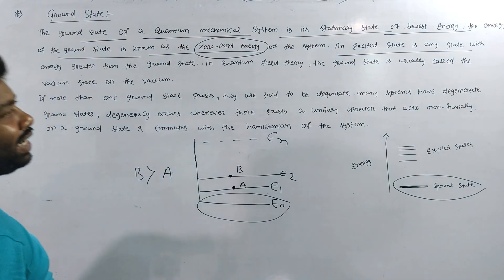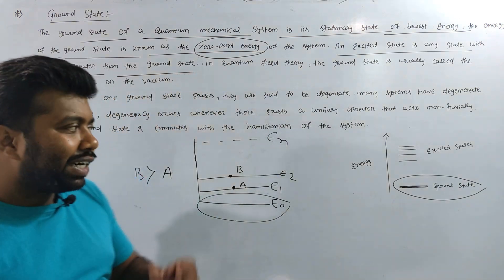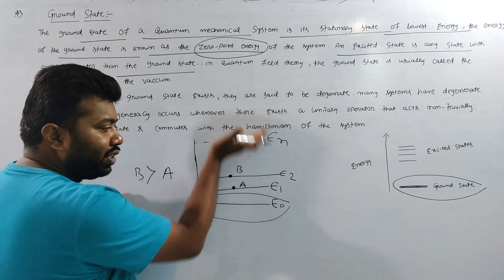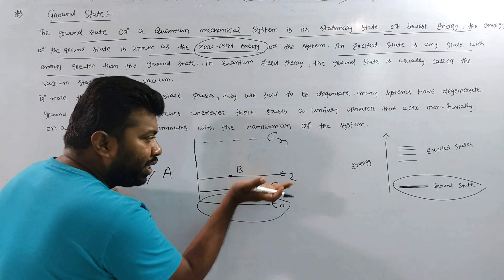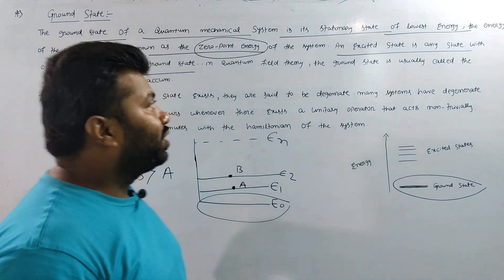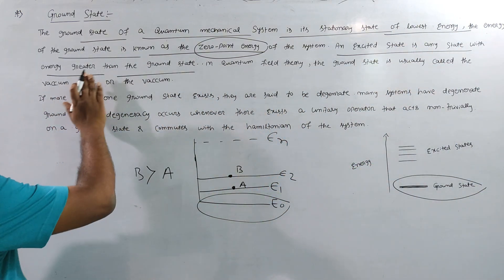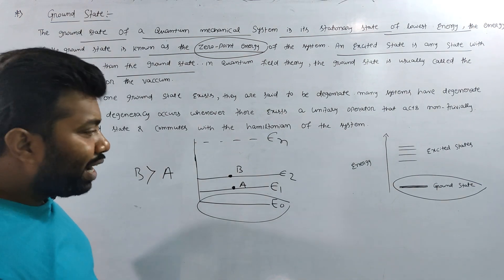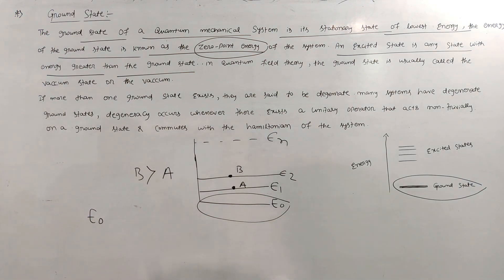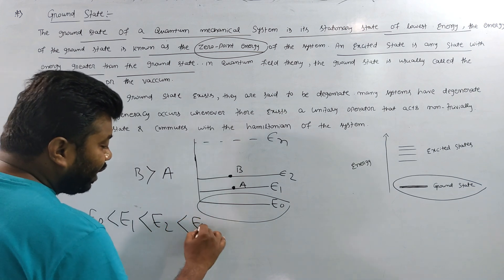An excited state is any state with energy greater than the ground state. The energy level of zero is E1, E2, E3, E4, etc. What is the excited energy state? An excited state is any state with energy greater than the ground state. That means E0 energy is the lowest, and E1, E2, E3 energy levels are above it.